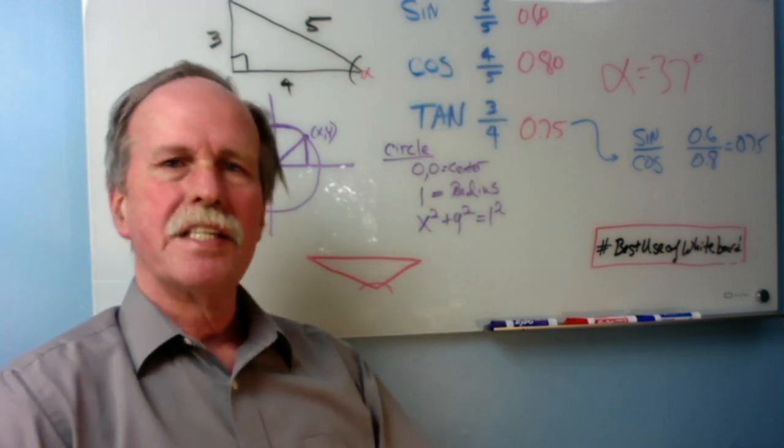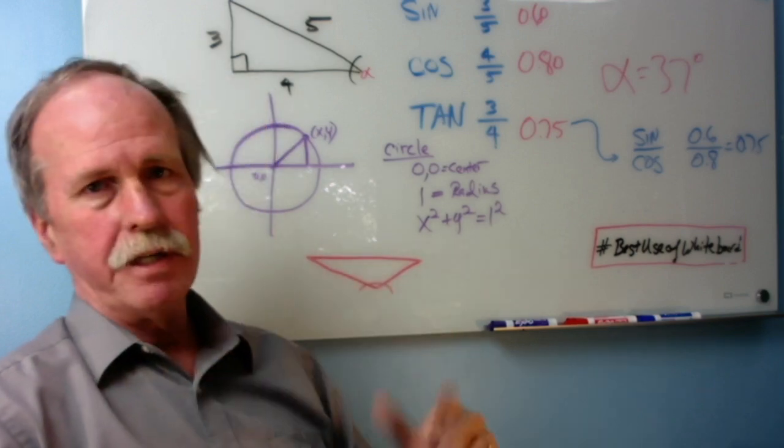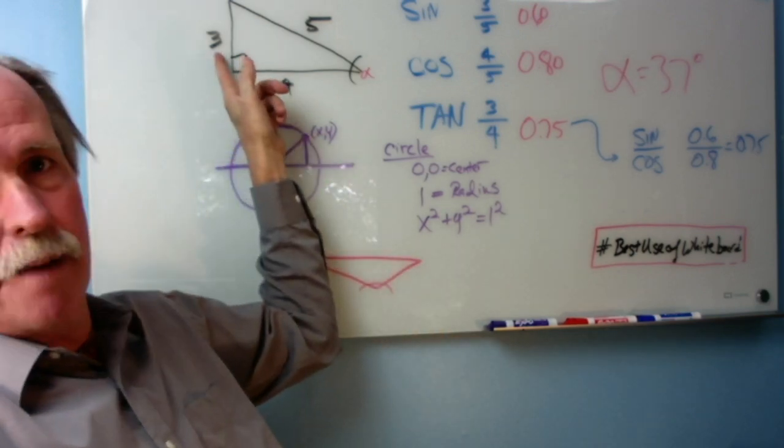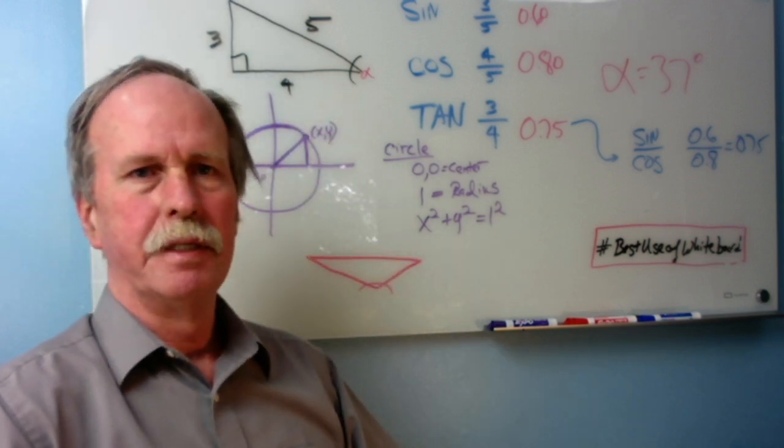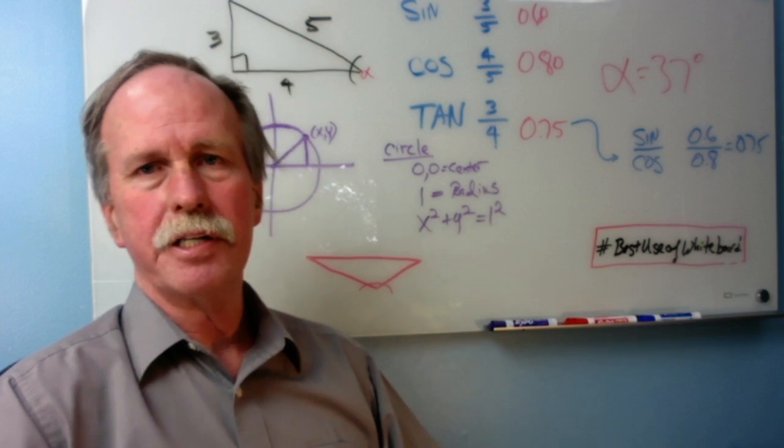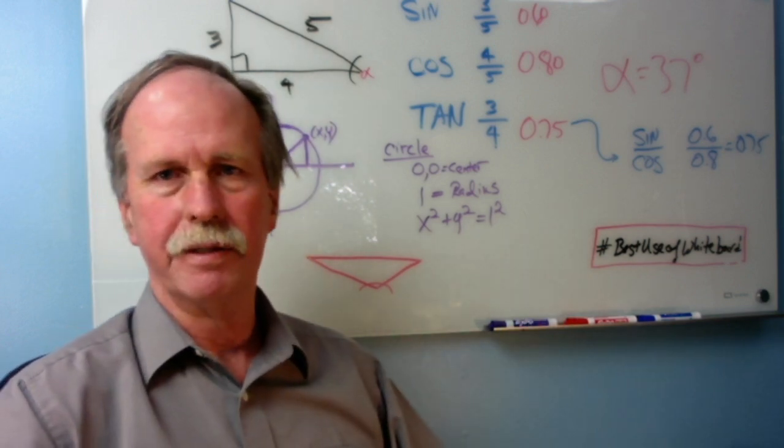And finally, what's the tangent? The tangent is a combination of the two. It's the opposite over the adjacent, so 3 over 4. For those of you that are curious, that works out to be about a 37-degree angle, angle alpha.